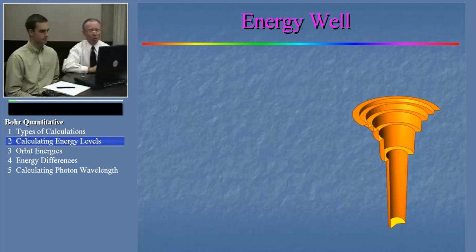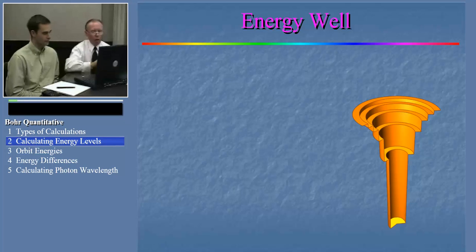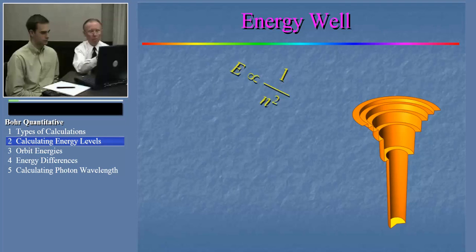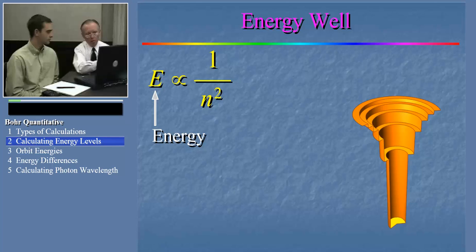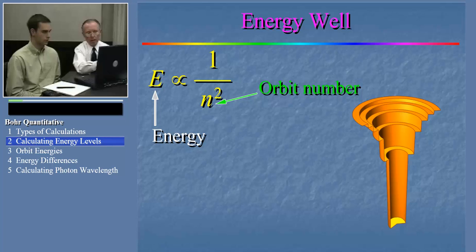The first principle we want to examine is this proportionality. According to the Bohr model, the energy of a given orbit varies inversely as the square of the orbit number — E varies as 1 over n squared.